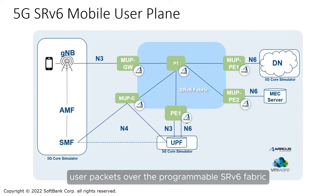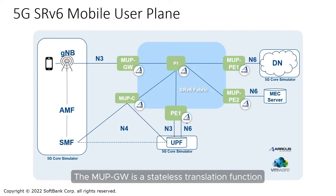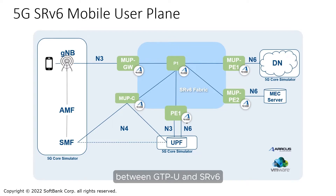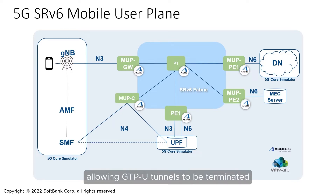The MUP PE and PE1 are SRV6 L3 VPN edge roles that can transport either GTPU or IPv4/IPv6 user packets over the programmable SRV6 fabric. The MUP gateway is a stateless translation function between GTPU and SRV6, allowing GTPU tunnels to be terminated at distributed edges on the SRV6 fabric.